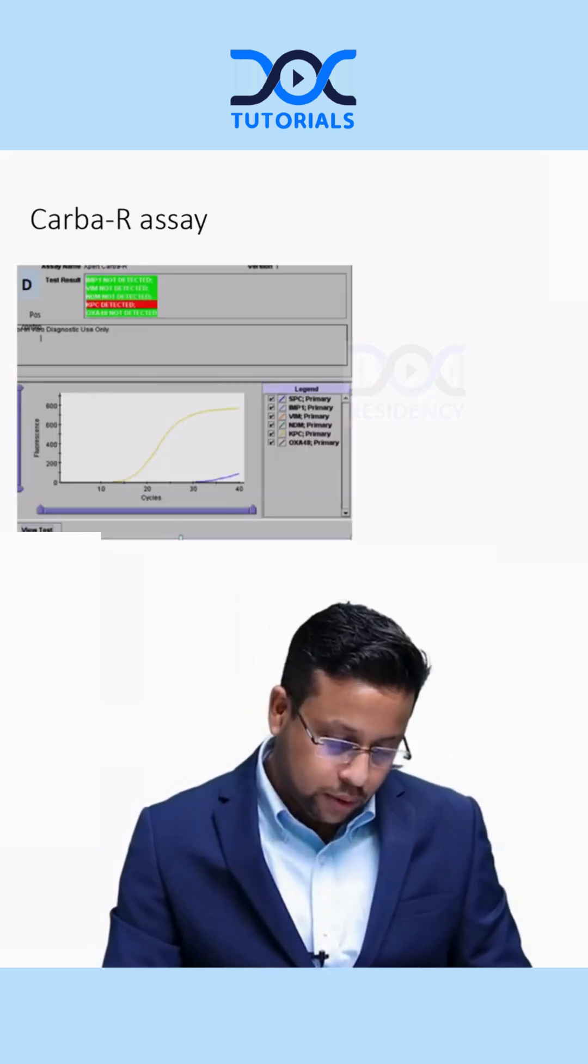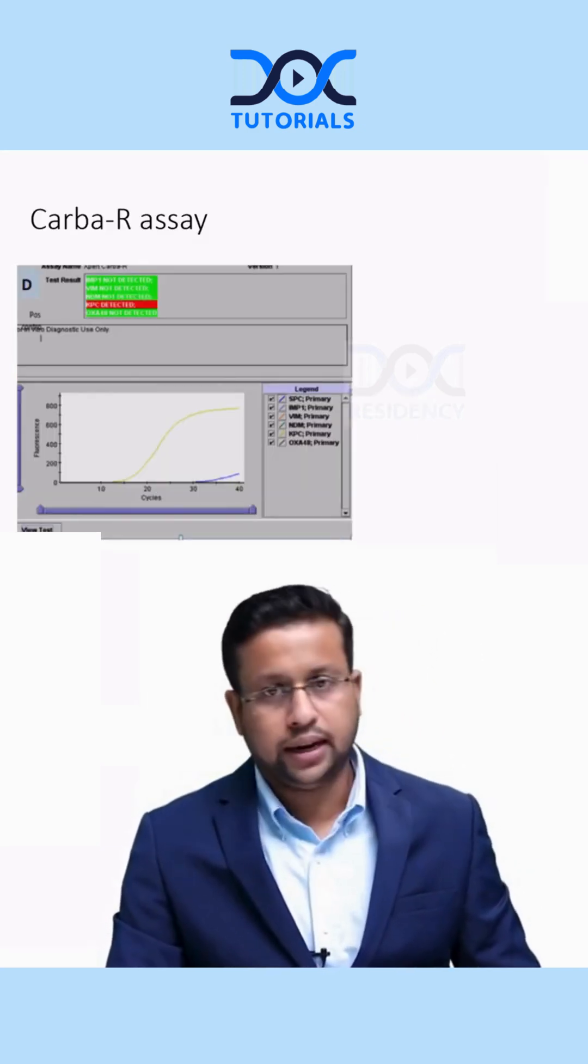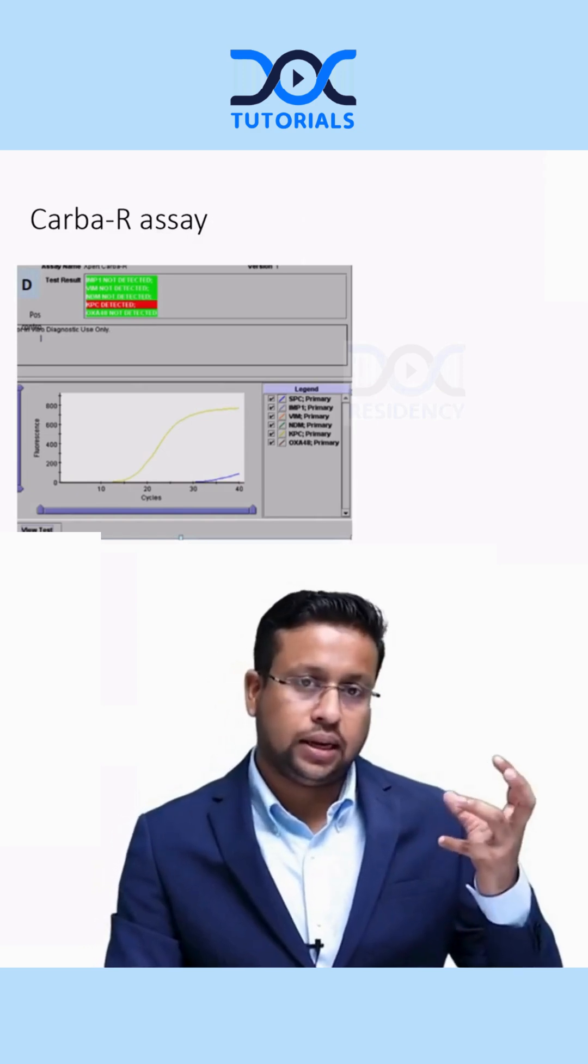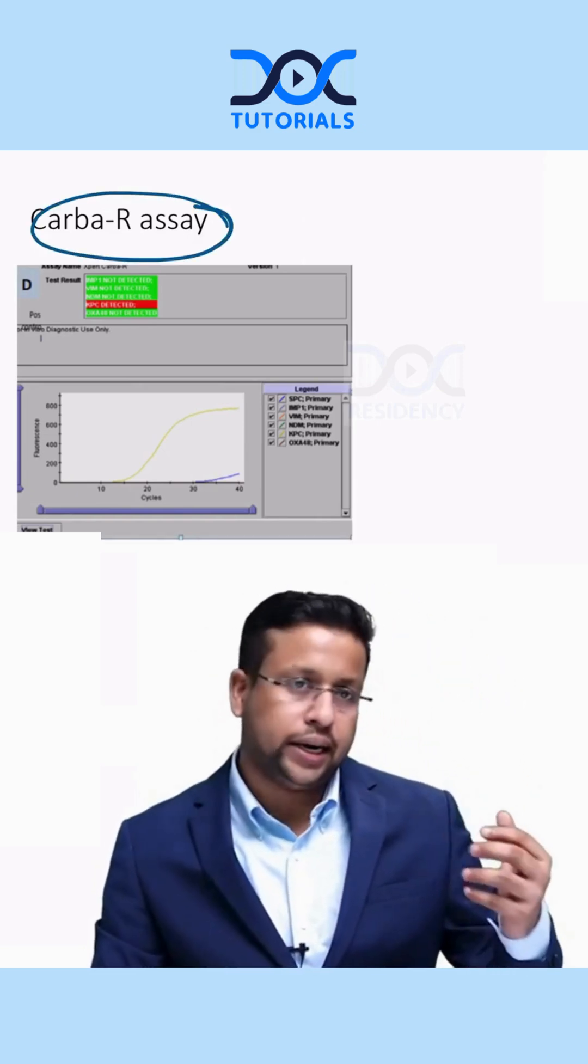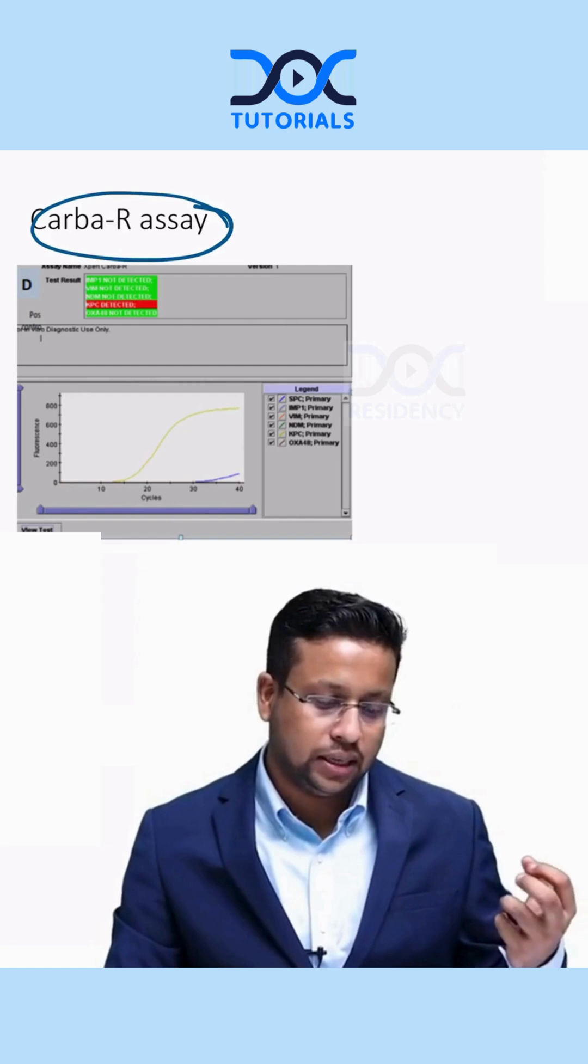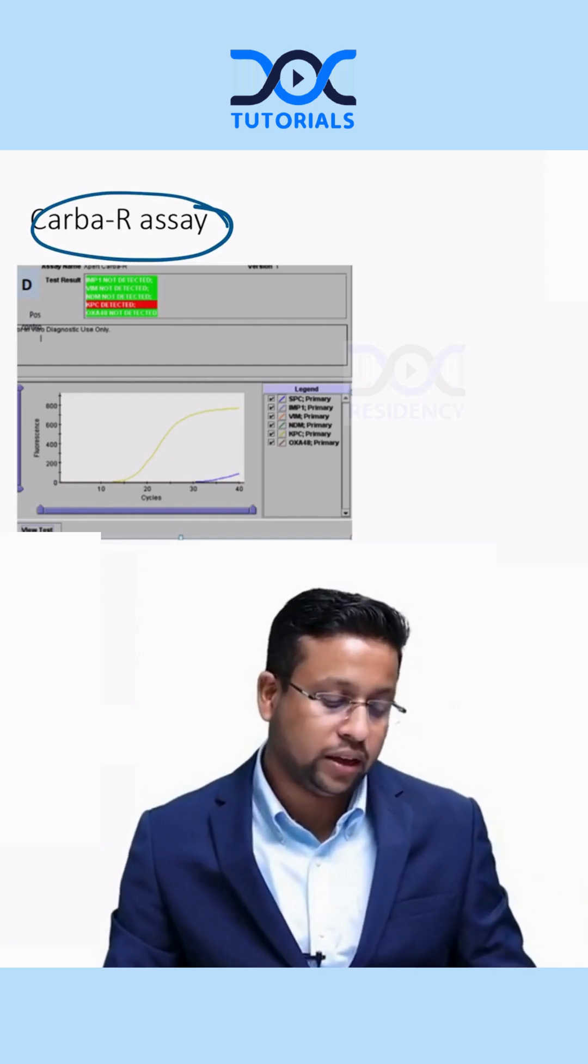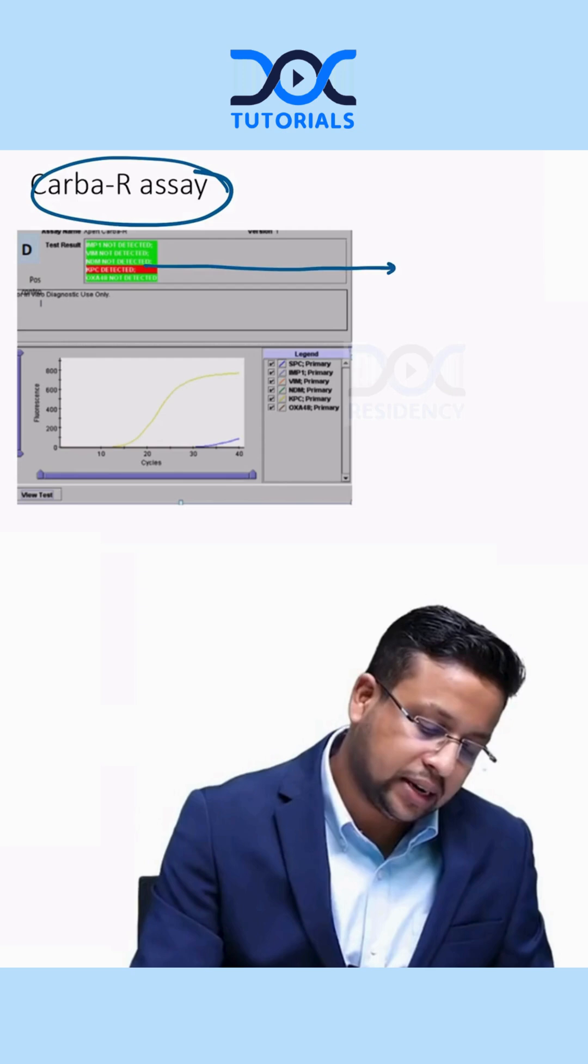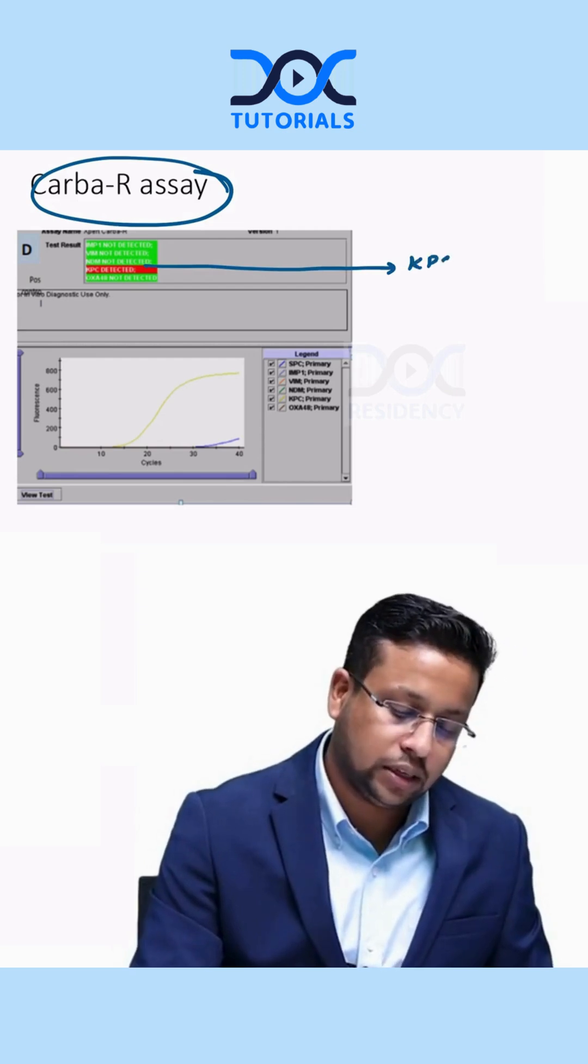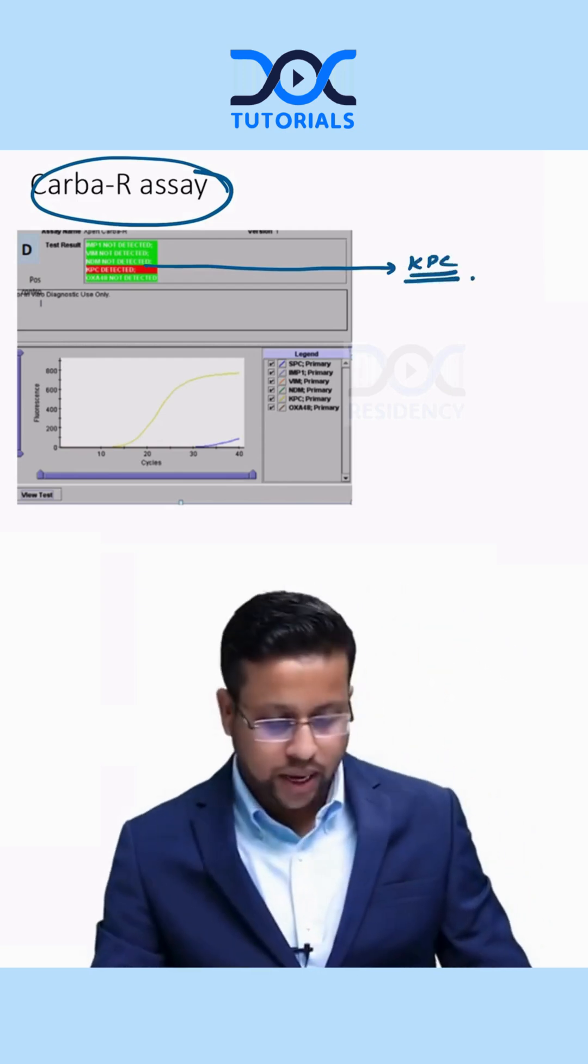What we did in this patient was a test called CARBA-R, which will tell you what kind of carbapenem-resistant gene this patient is possibly having or whether there is a carbapenem-resistant gene at all. In this case, it detected a carbapenem-resistant gene called KPC.